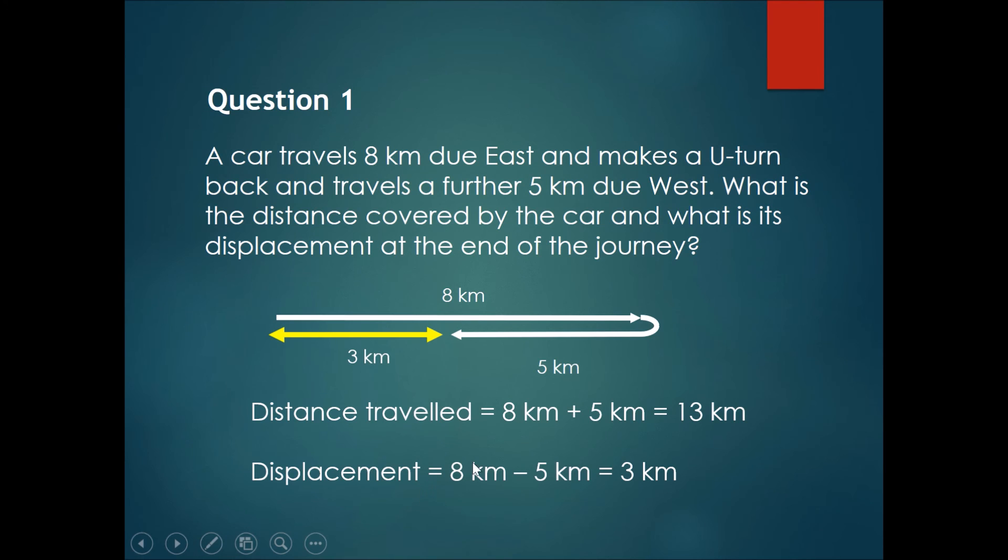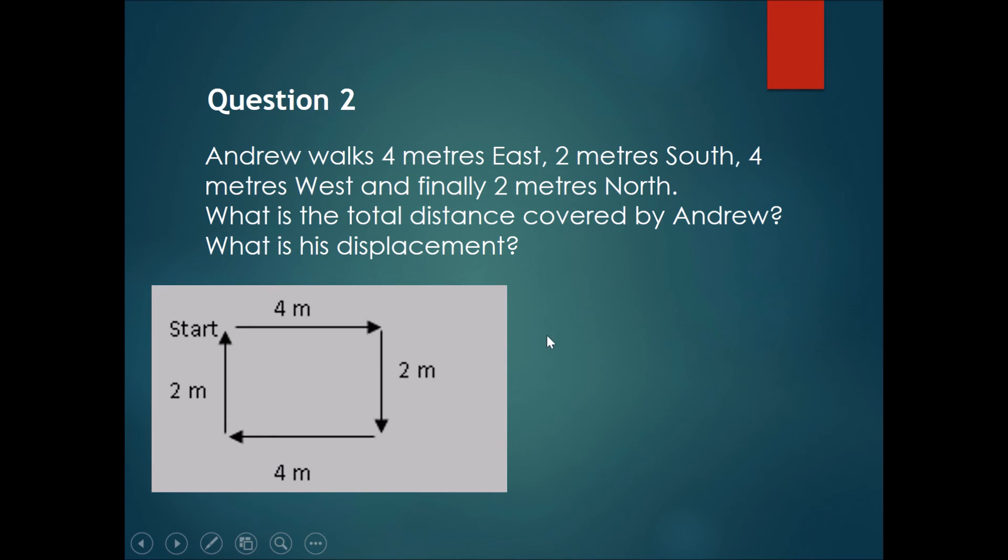This is quite a common trick question. This guy walks 4 meters east, 2 meters south, 4 meters west, and finally 2 meters north. So what is his distance and what is his displacement? Please pause the video here.